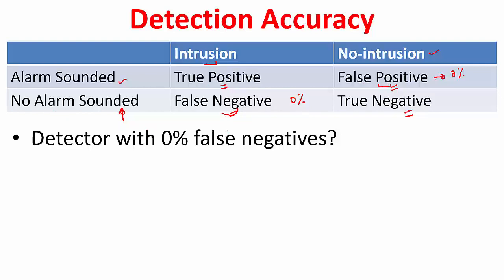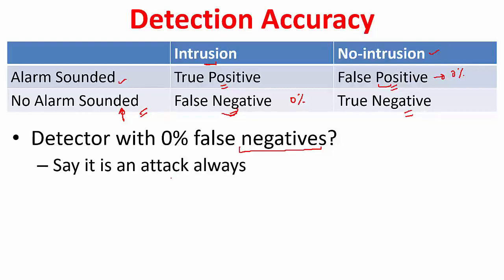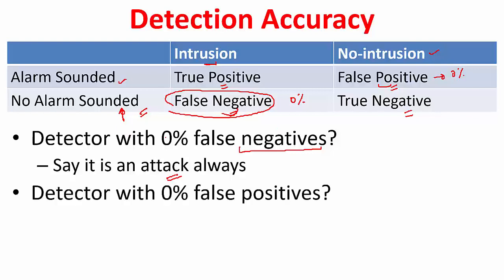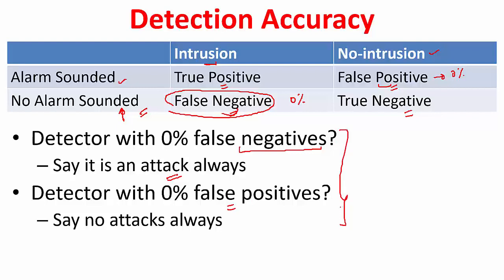Can you think of a detector that always gives zero percent false negative? A false negative is a problem when there has been an intrusion and you could not detect it. So to achieve zero percent false negatives, you would just say everything is an attack — always sound an alarm. In that case, your false negatives will be zero percent because you are always sounding an alarm. Similarly, a detector with zero percent false positives would always say there is no attack, and that way you achieve zero percent false positives.